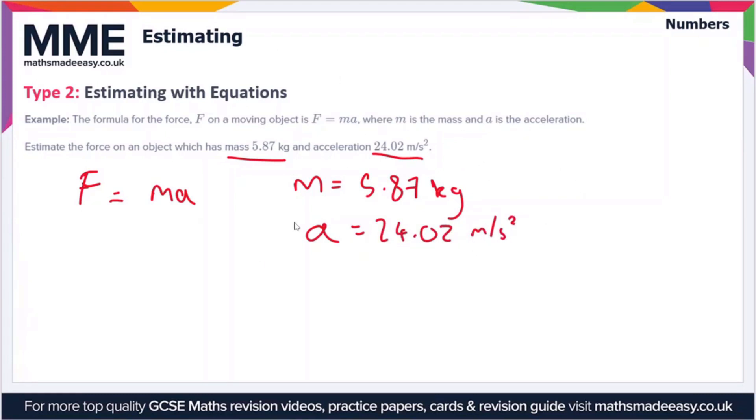So what we're going to need to do is approximate both of these values. I'm going to use one significant figure here. So we're going to have 6 kilograms and 20 meters per second squared. Now you could use two significant figures for the acceleration if you wanted to, but the whole point of estimation is to make the calculation simpler.